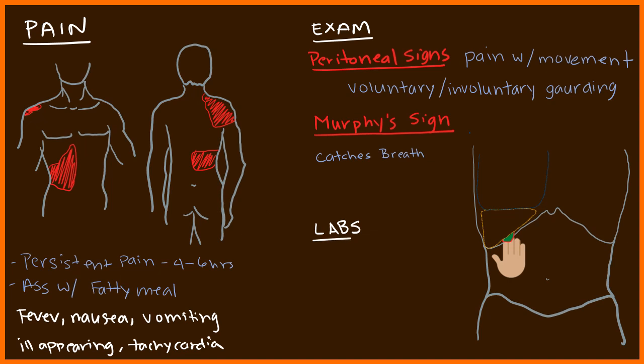It's important to review labs. Typically you'll see an elevated white count, possibly with bands. You also want to measure bilirubin and ALP — in uncomplicated cholecystitis, these should not be very elevated, because the gallstone is in the cystic duct and shouldn't affect the common bile duct or hepatic duct. Elevated bilirubin can suggest obstructive hepatitis and raises concern for cholangitis or choledocholithiasis. Liver function tests should also be normal in uncomplicated cholecystitis; if elevated, something else may be affecting the common bile duct.